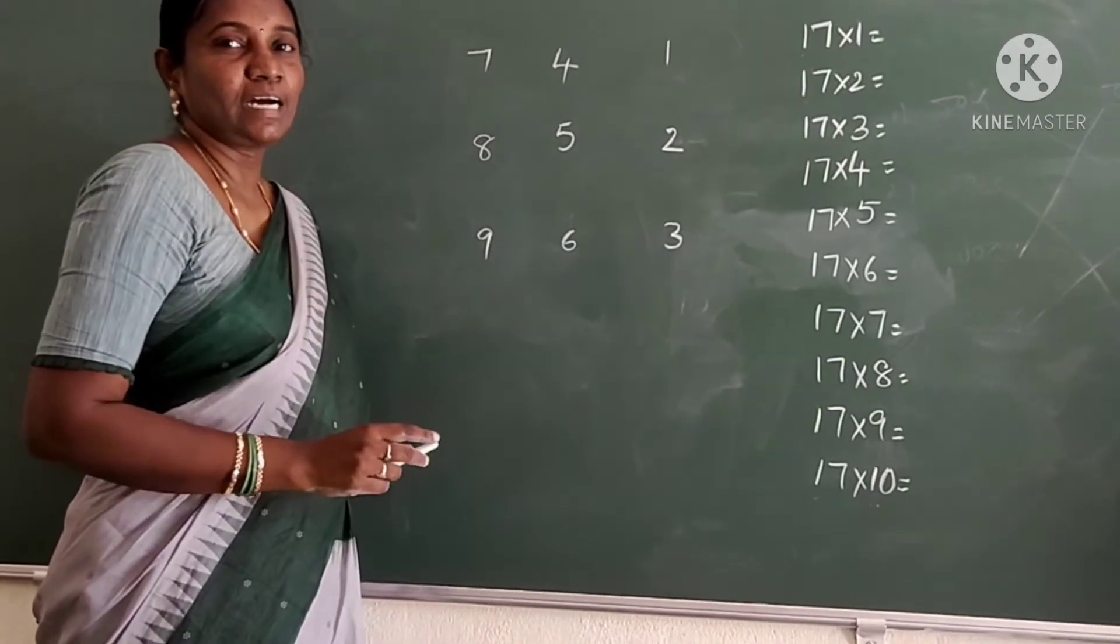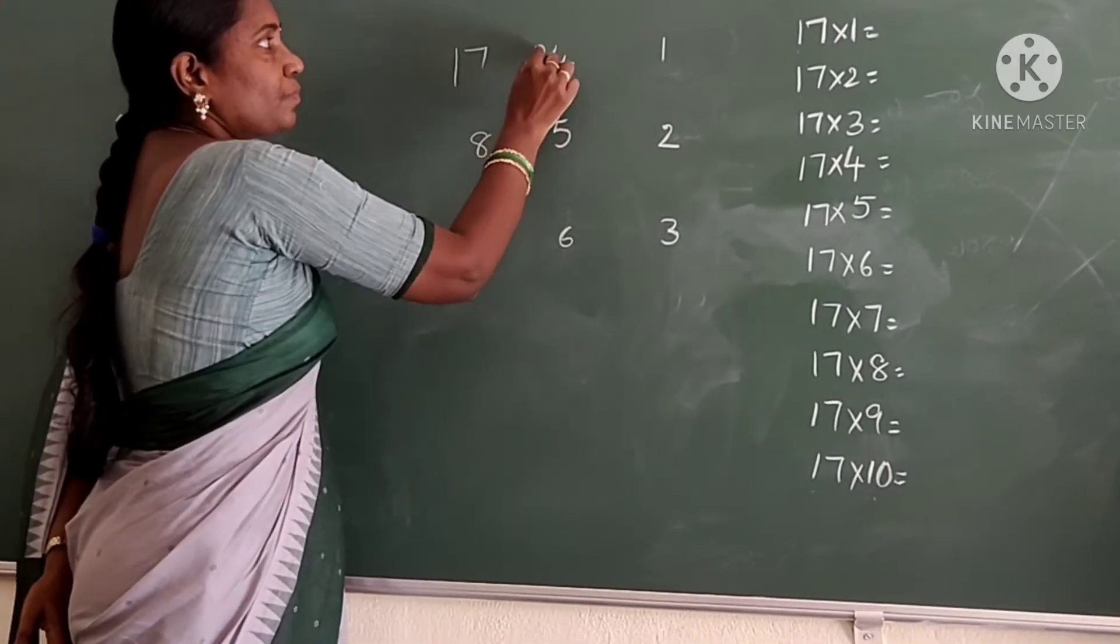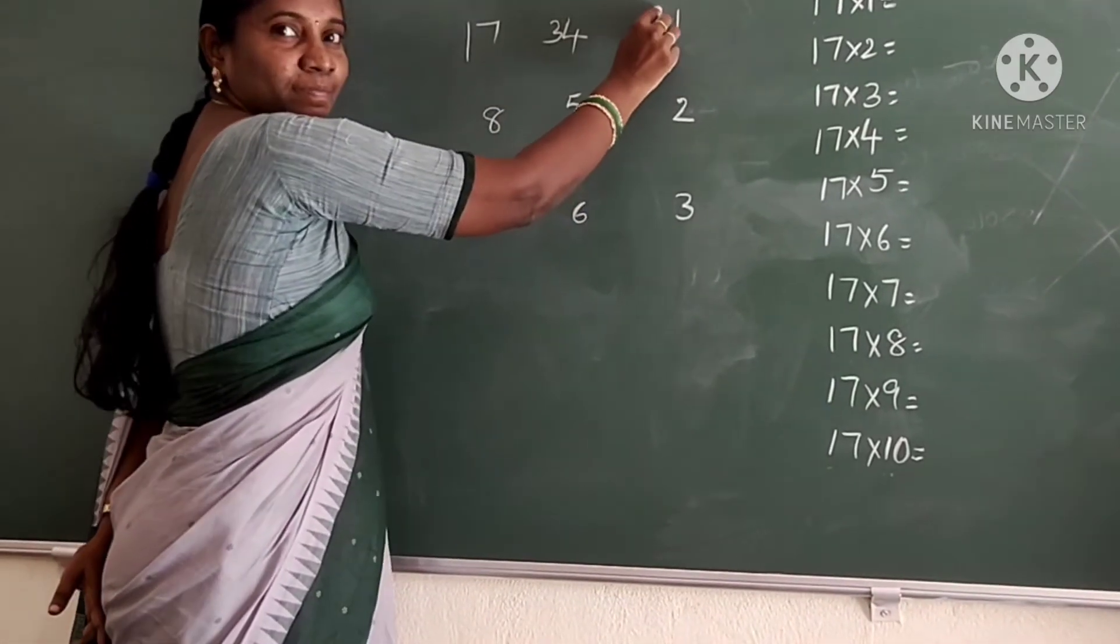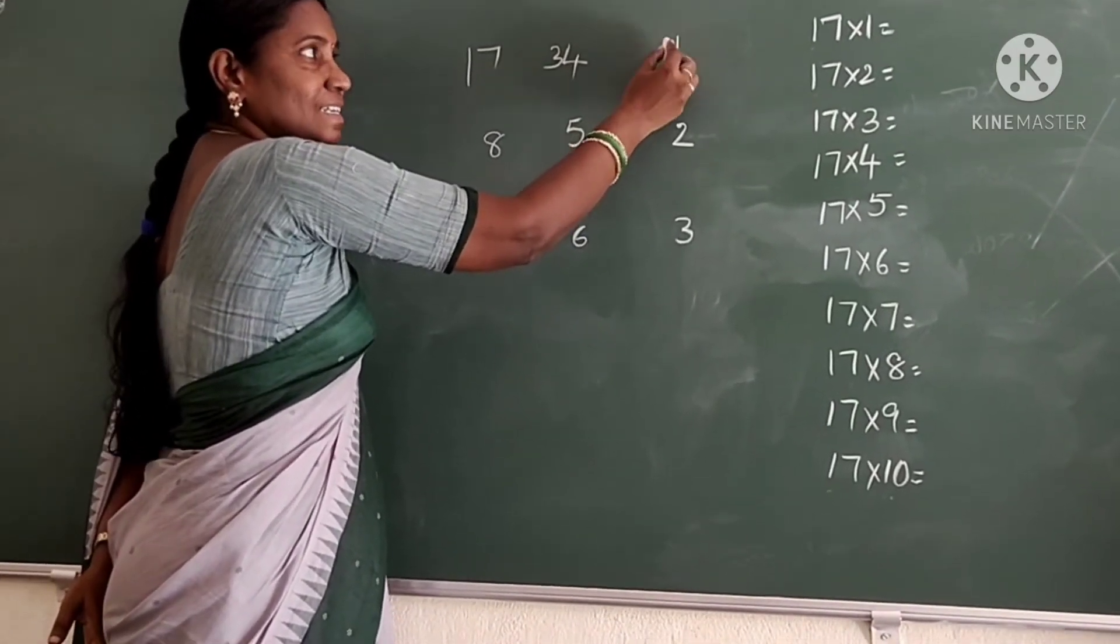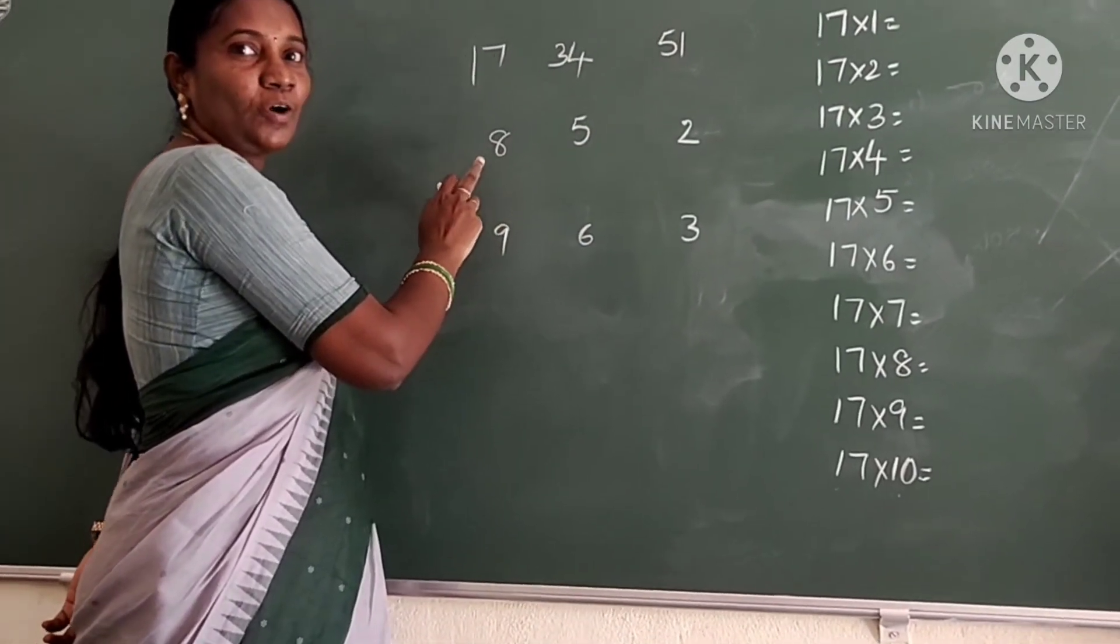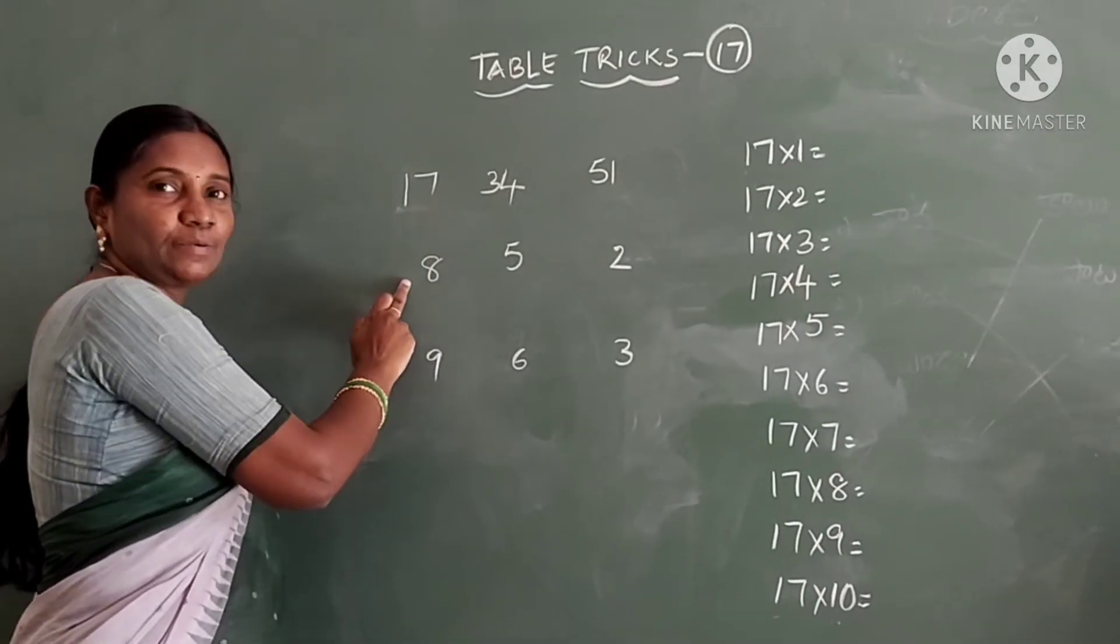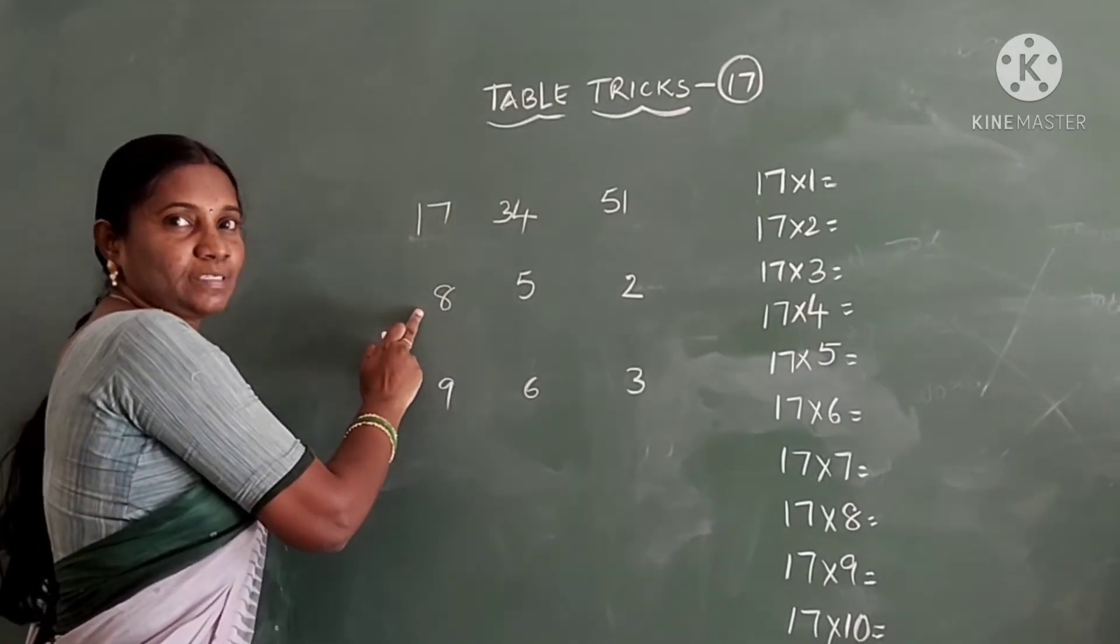First we have to start with the odd numbers. 1, 3, what is this? 5. Very good. And let us write odd numbers. Here we have written odd numbers and here we have to write even numbers.